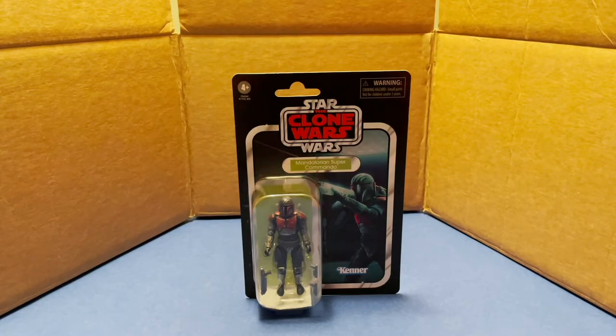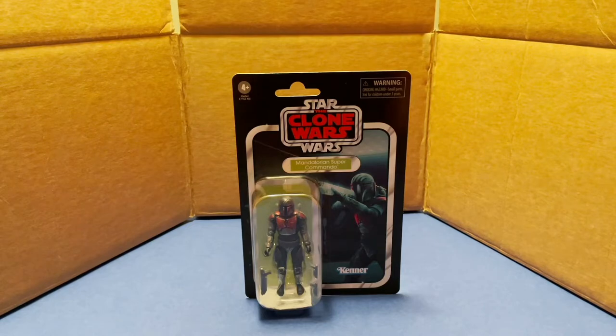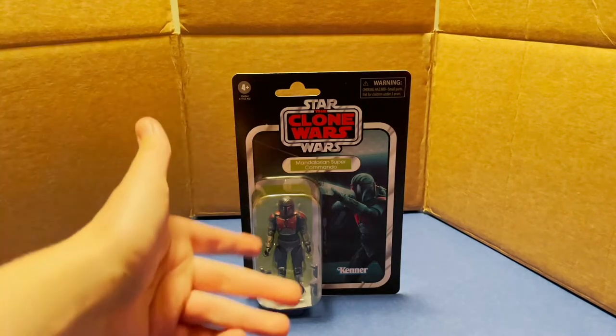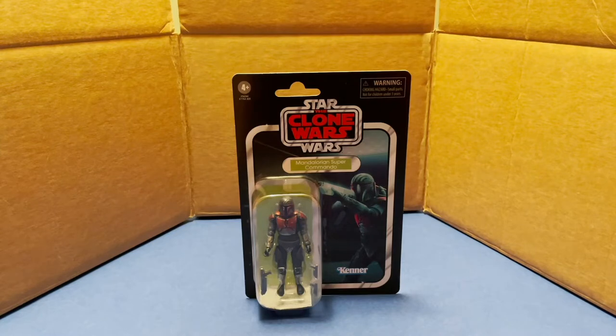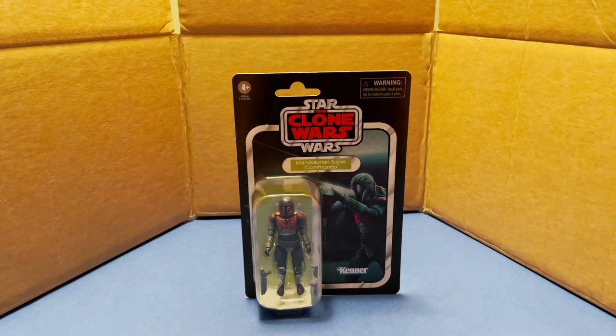This was from the arc, might have been in season seven as well, but what I remember these guys being in is the arc where Obi-Wan was in the armor of one of these troopers and was disguising himself so he could go rescue Satine when Maul had taken over Mandalore's government. It was a really cool arc. These guys are really cool looking Mandalorian commando troopers.